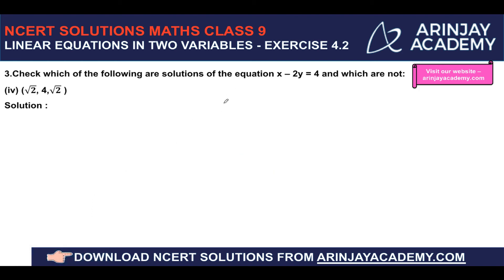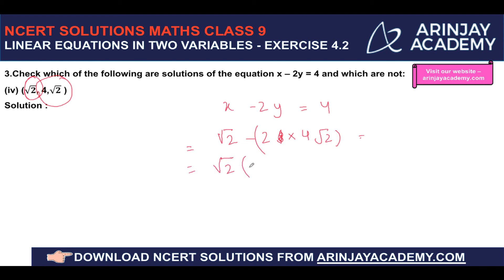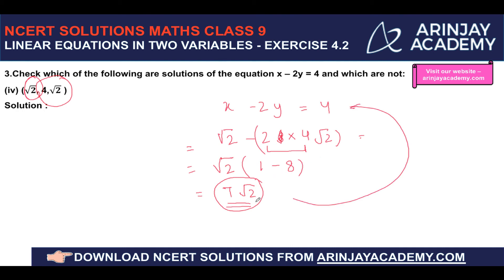For the pair (√2, 4√2): substituting x equals √2 and y equals 4√2 gives √2 minus 2 times 4√2. Taking √2 as common gives √2 times (1 minus 8), which equals −7√2. Since −7√2 is not equal to 4, this is not a solution of x minus 2y equals 4.